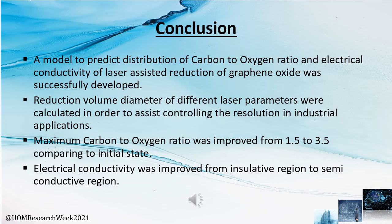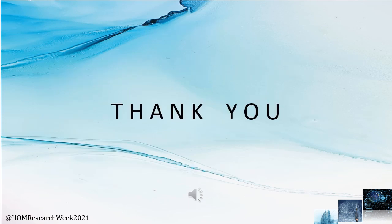In summary, we developed a model to predict the distribution of carbon to oxygen ratio and electrical conductivity of laser-assisted reduction of graphene oxide. Reduction volume diameter for different laser parameters was calculated to assist control of resolution in industrial applications. Maximum carbon to oxygen ratio was improved from 1.5 to 3.5 compared to the initial state, and electrical conductivity was improved from the insulative region to the semi-conductive region. This is the end of our presentation. We sincerely appreciate your attention today.